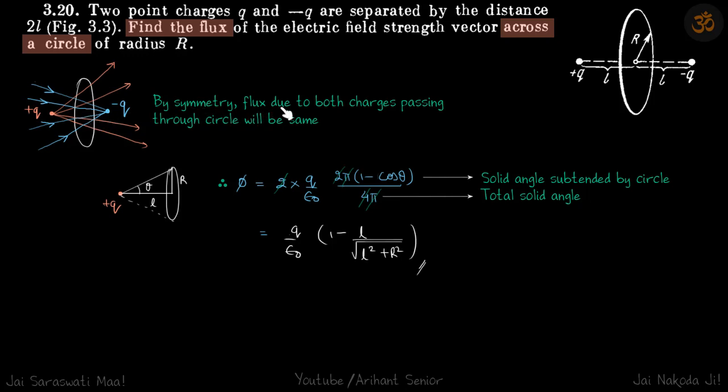By symmetry, flux due to both charges passing through the circle will be same. So flux is two times flux due to one charge. Let's calculate the flux due to plus Q and we can multiply it by two to get the total flux through the region.